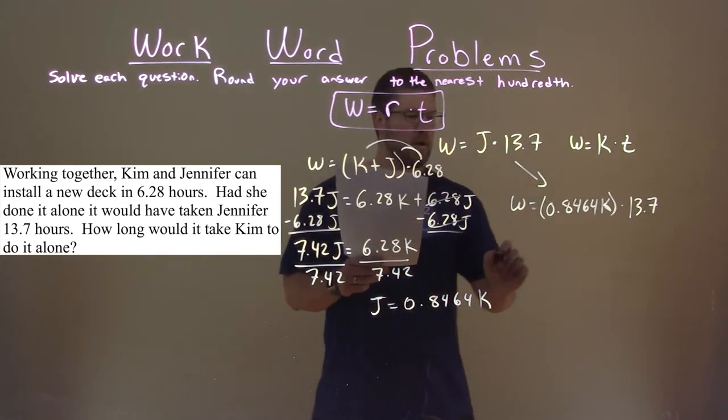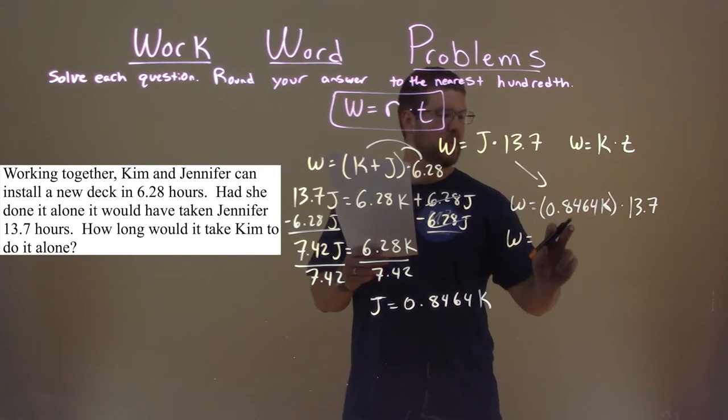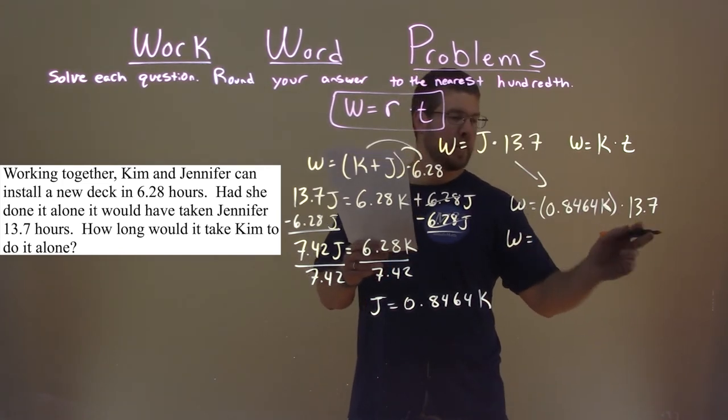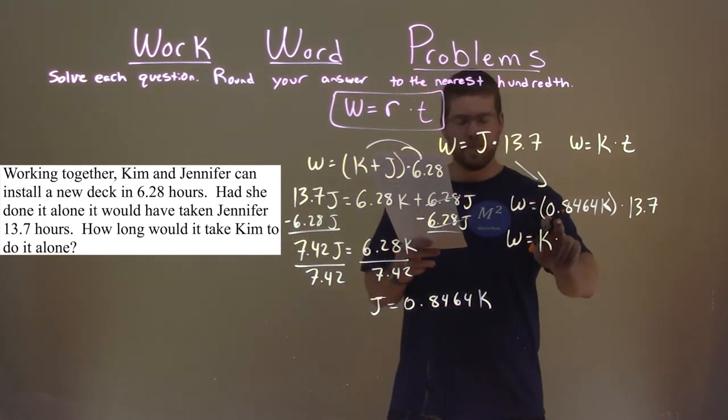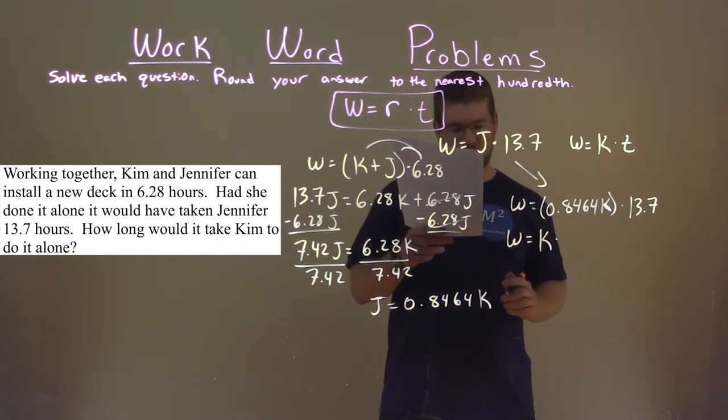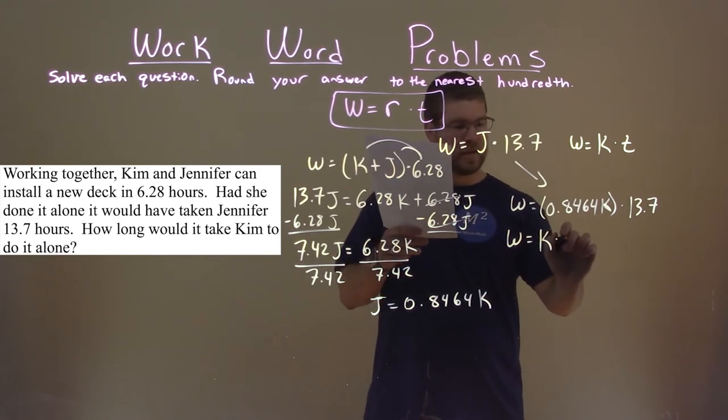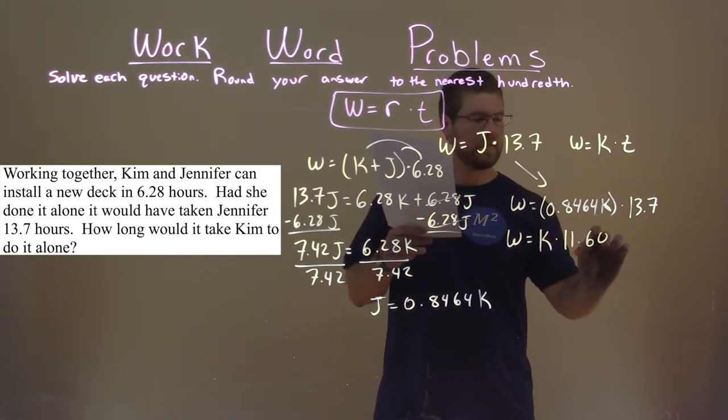Well, the work here is equal to, since it's all multiplication, we can rearrange this. Let's put K first and multiply it by 0.8464 times 13.7. That's going to be approximately 11.60.